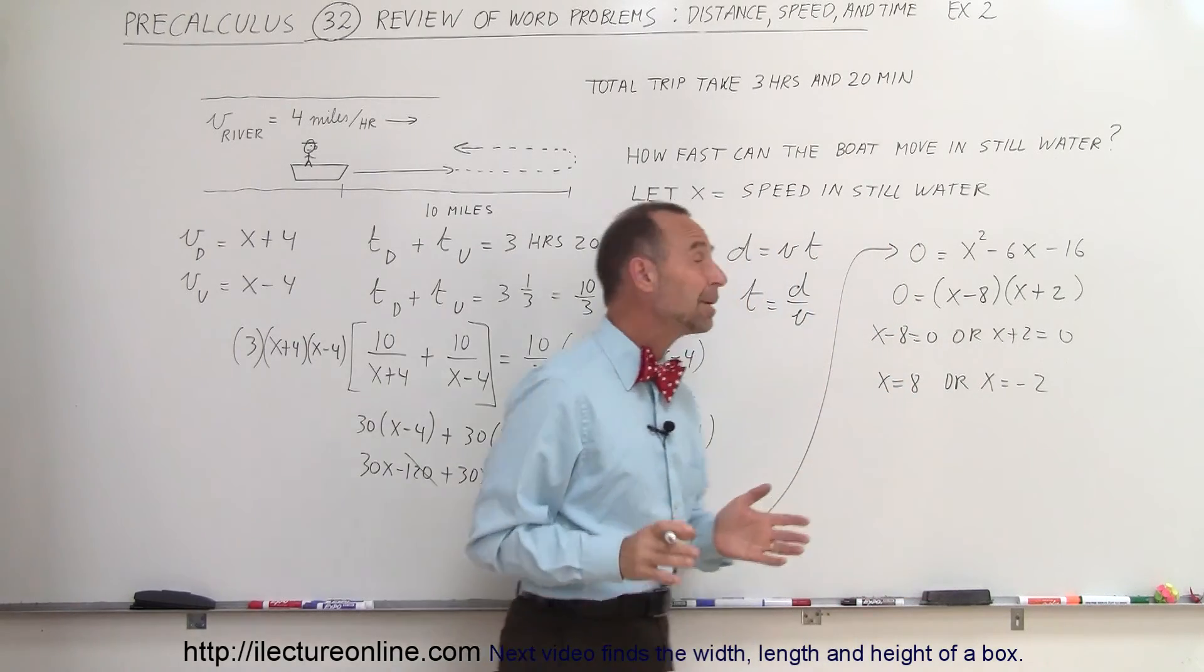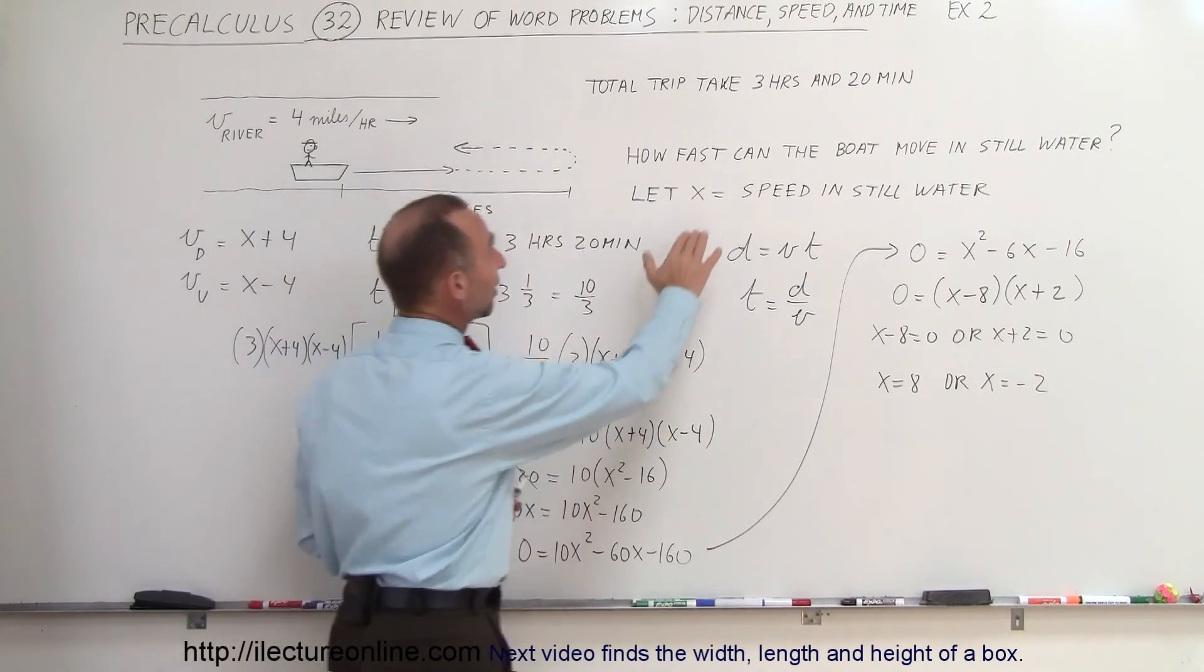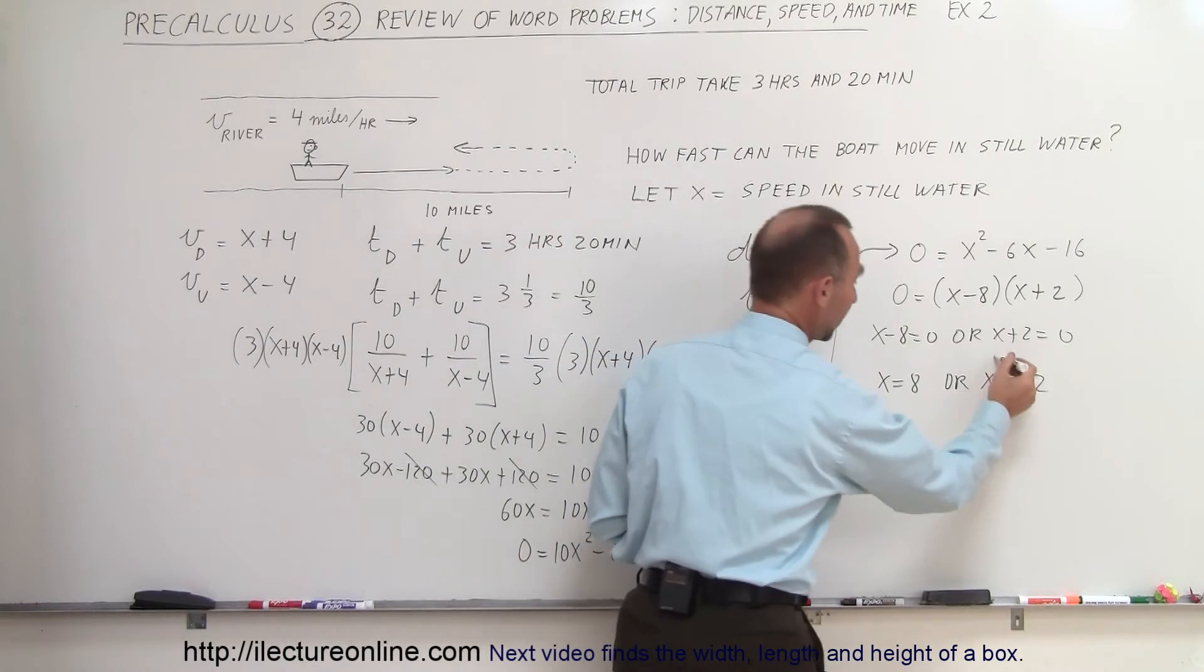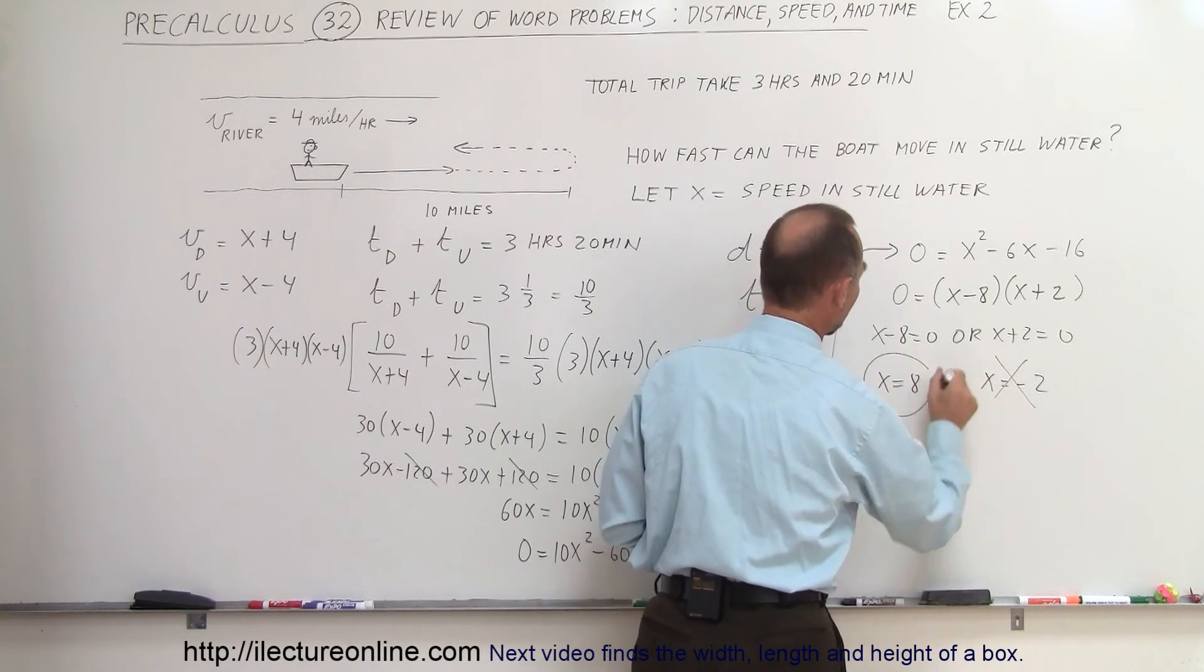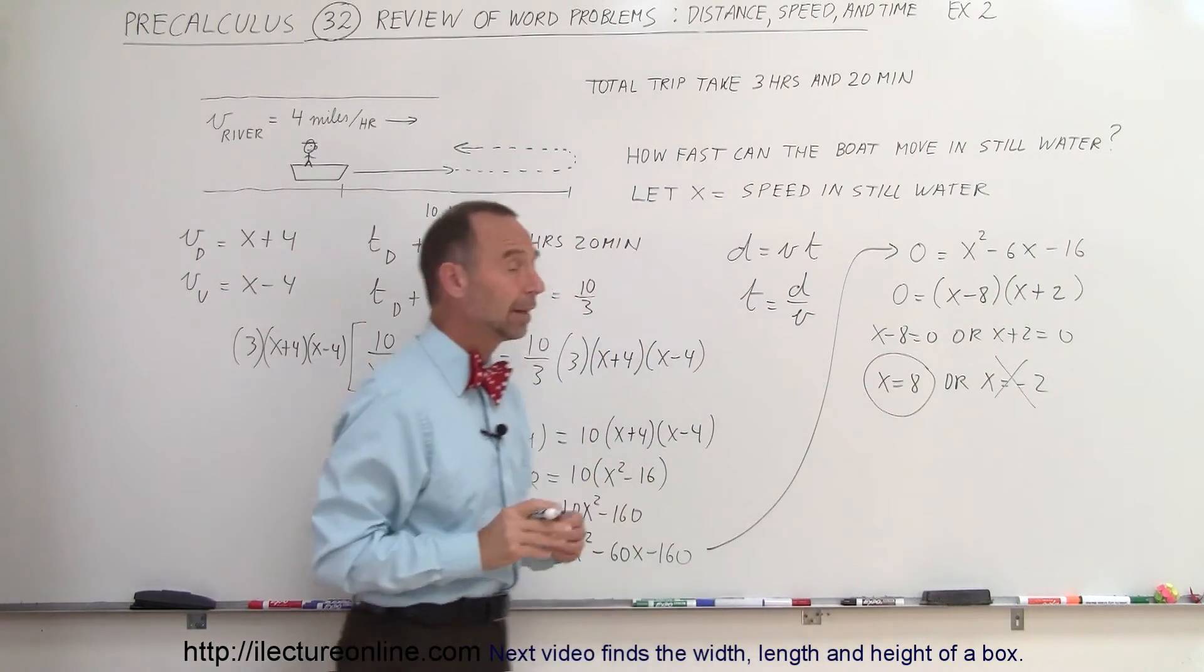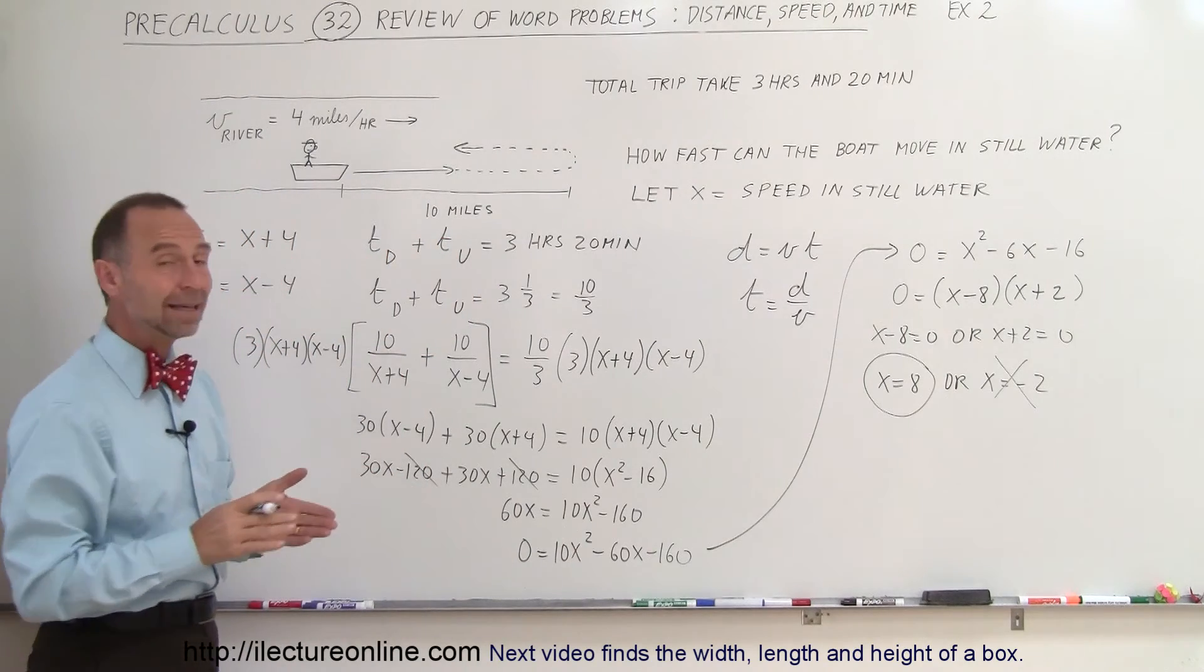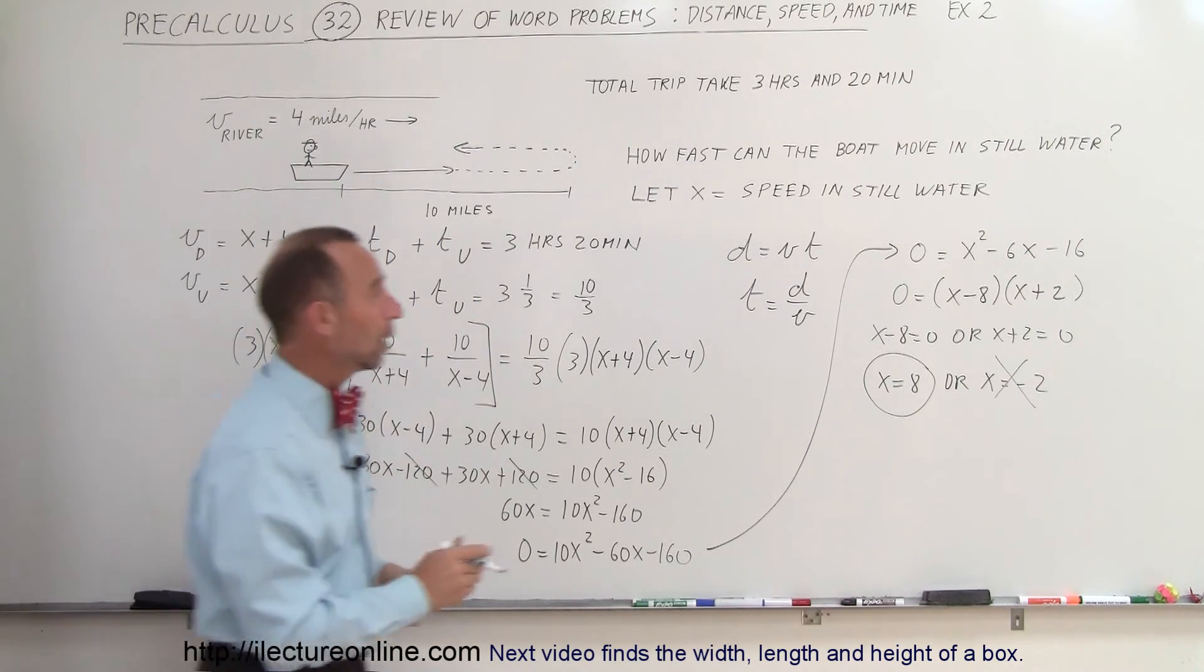Of course, x cannot be minus 2, that would mean that the boat has negative speed, that doesn't work, so we can get rid of this possibility. The only possibility here is x equals 8, which means that 8 miles per hour is the speed in still water.